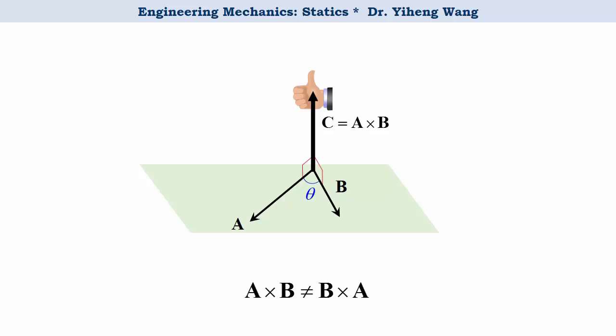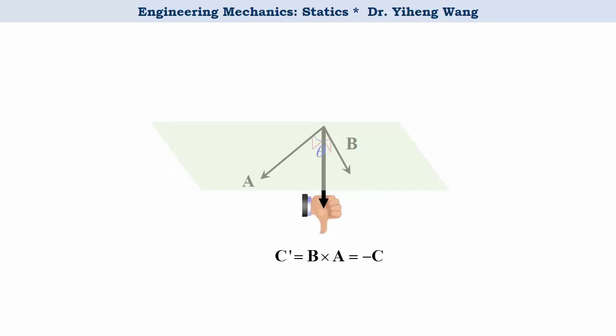A cross B is not the same as B cross A. In fact, B cross A represents another vector C prime that is in the opposite direction as vector C and therefore equals negative vector C.